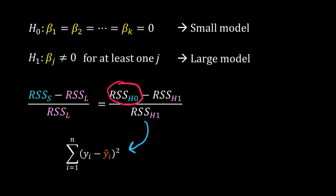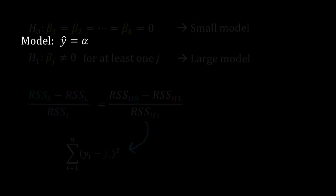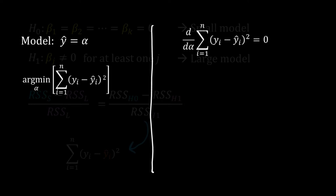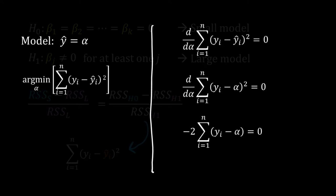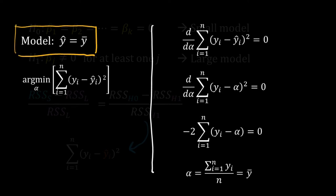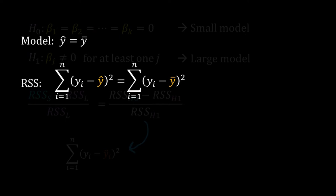To understand that, let's check the equation of the null model. Our null model is ŷ = α — no beta terms, as all betas are zero. I have to estimate α from the data; for that we use regression, minimizing the RSS of the error in the model. I differentiate the error with respect to α and set that equal to zero. Replacing ŷᵢ by α and doing the differentiation, I get α = Σyᵢ / n = ȳ, the mean of y. So our null model is ŷ = ȳ, and the RSS of this model is Σ(yᵢ - ȳ)².